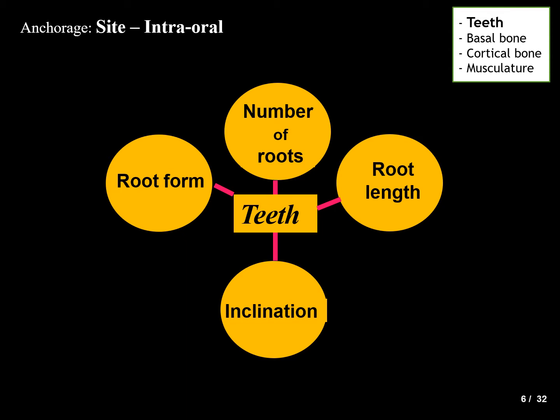Under the intraoral site, the first division is teeth. There are four parameters: number of roots, root form, inclination of the tooth, and root length. Each tooth is different — it can have one to three roots, different inclinations, and varying root lengths — and all these must be considered when planning to use a tooth as an anchorage unit.